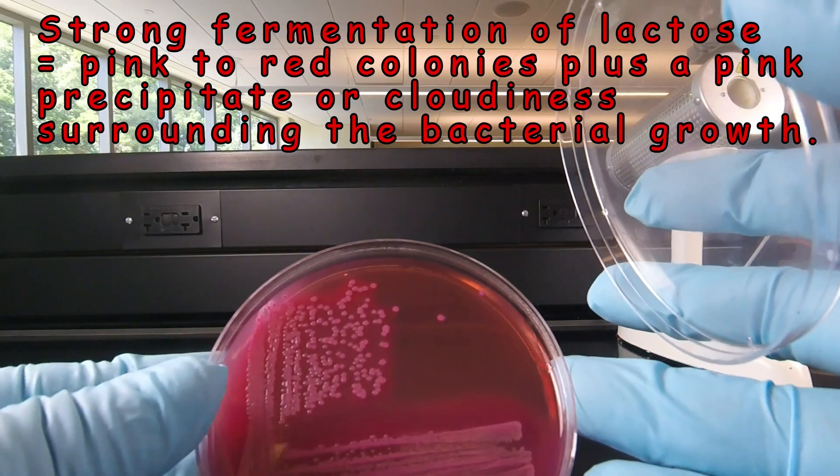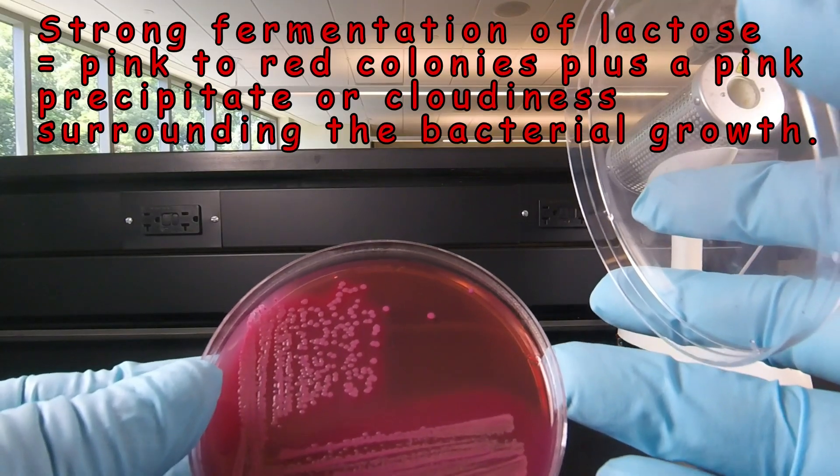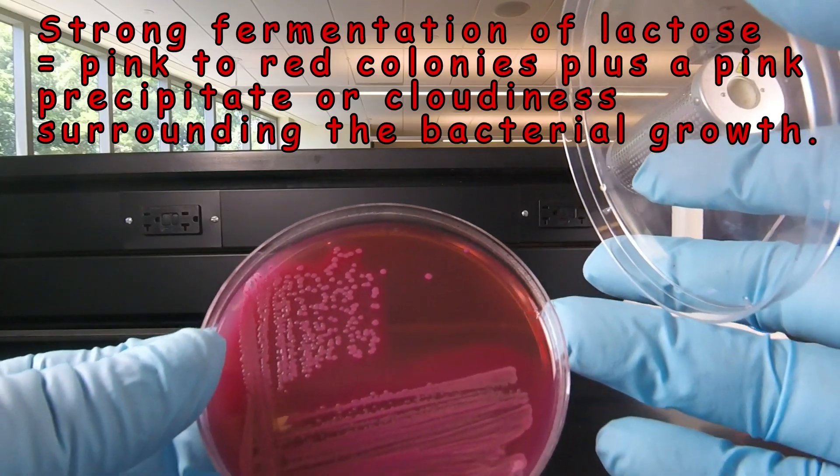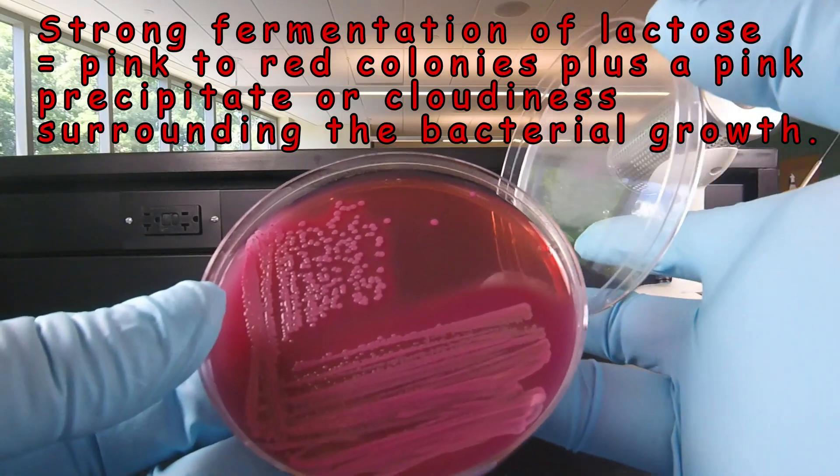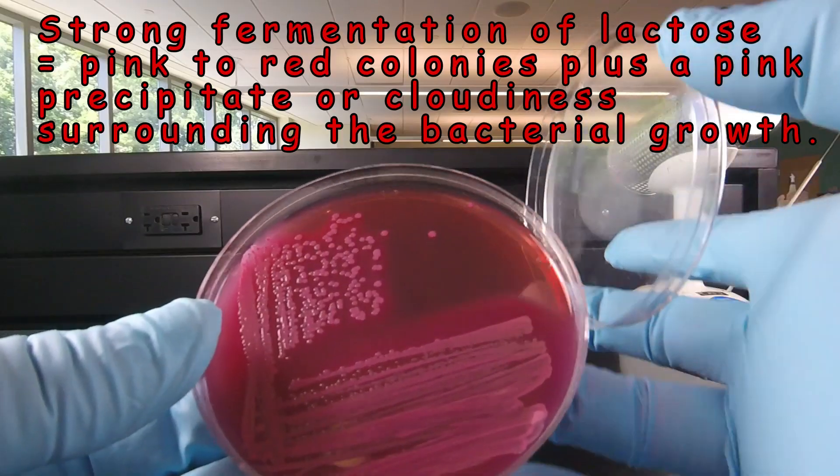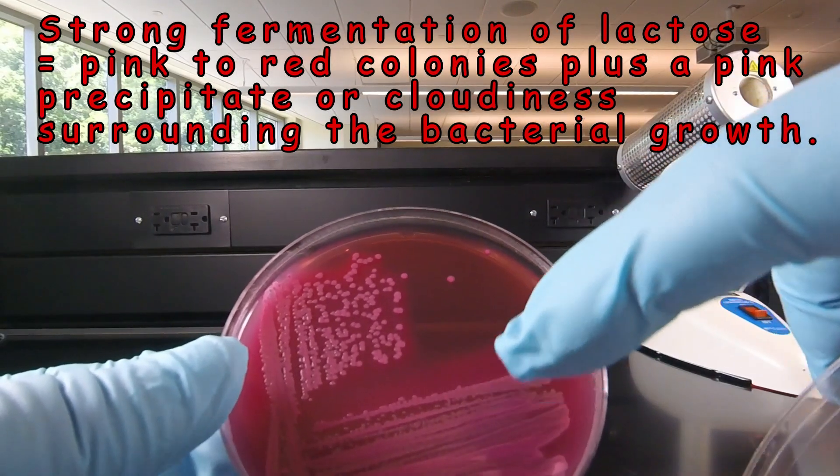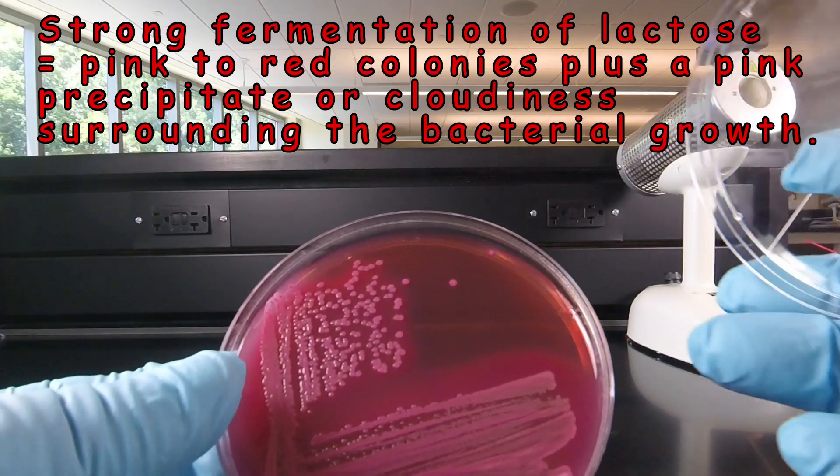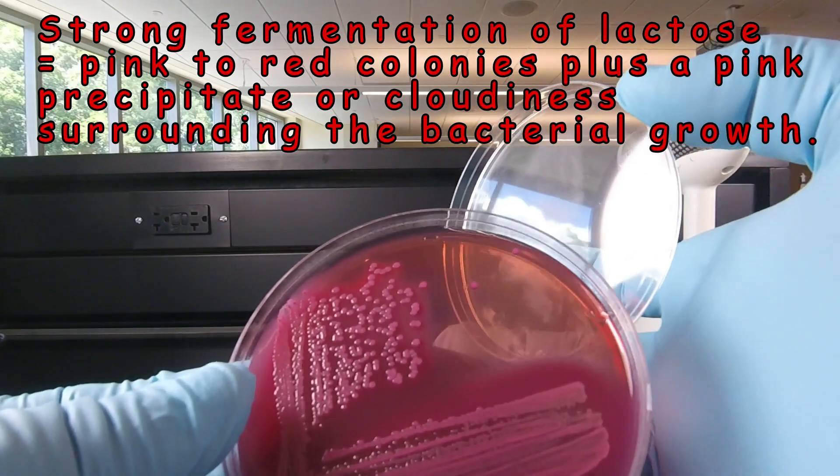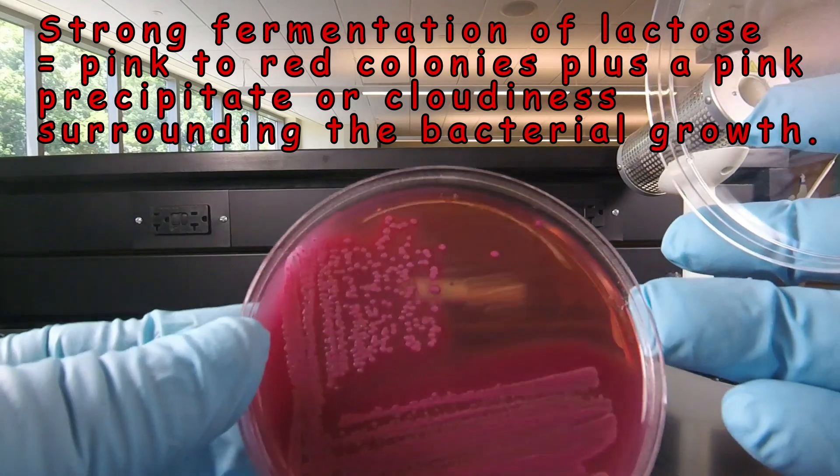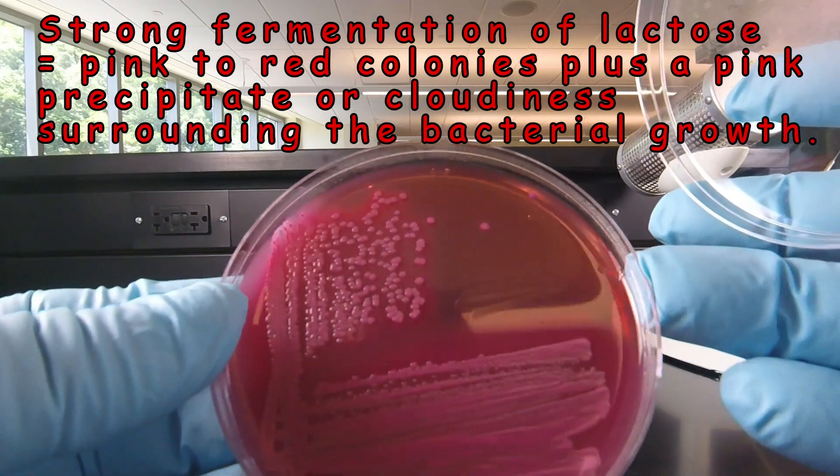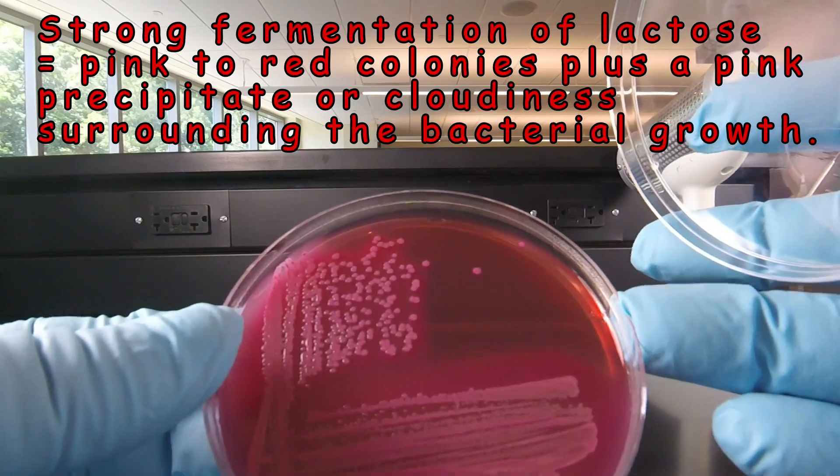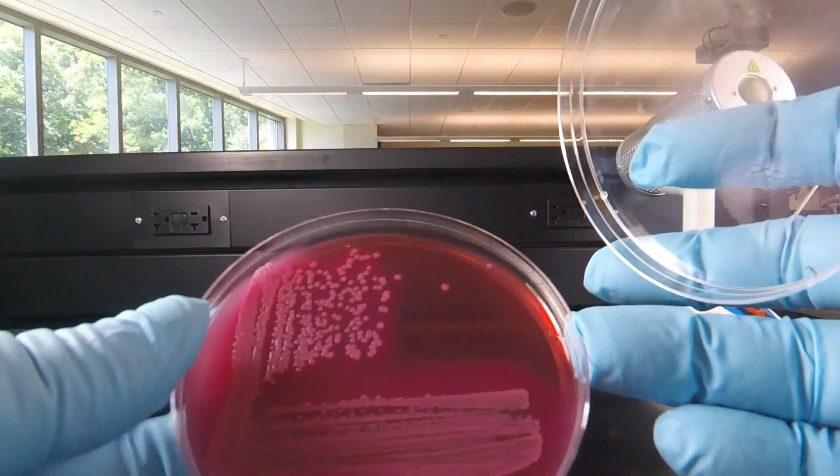the bile salts in the agar precipitate out of solution, causing the agar to appear bright pink and cloudy. You can see this around solid growth, such as we're seeing right here surrounding the growth. There's a nice pink halo or precipitate around the growth. We can also see that around the isolated colonies here. So when we see that dark pink precipitate or cloudiness surrounding the growth, that indicates strong fermentation of lactose.